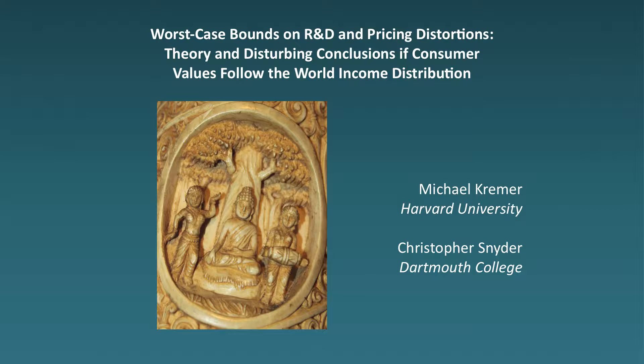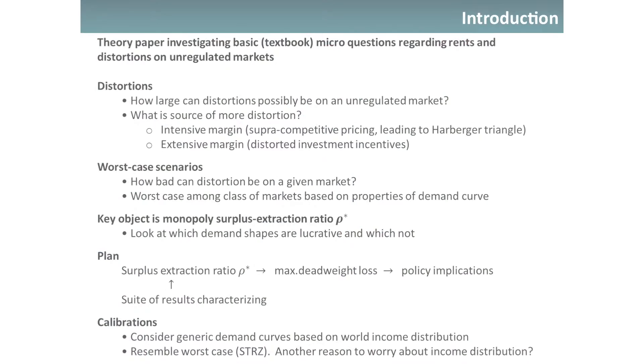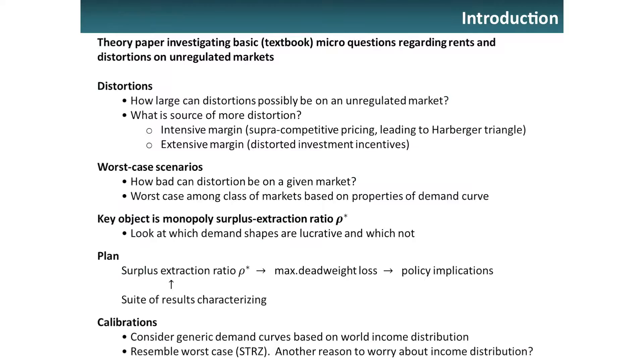This is a theory paper investigating some basic fundamental ideas — textbook ideas, really — on distortions in commercial unregulated markets without any externalities. I think Gary Becker probably knew all these things, and if he didn't, he'll be able to intuit them before I finish the relevant slide. We're going to be talking about distortions on commercial markets, again no externalities, no government intervention — just distortions due to an inability to extract surplus that firms create.